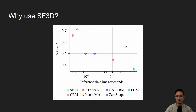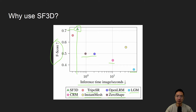Here you can look at some of the performance specifically for SF3D. We have different models: SF3D, CRM, TripOSR, Instant Mesh, OpenLRM, ZeroShape, and LGM. On the bottom is the inference time or image per second, and on the y-axis is the F-score. SF3D, the green triangle, is pretty high at about 0.7 with very fast inference time. Instant Mesh is a pretty good competitor — even though it takes longer, its F-score is pretty high.